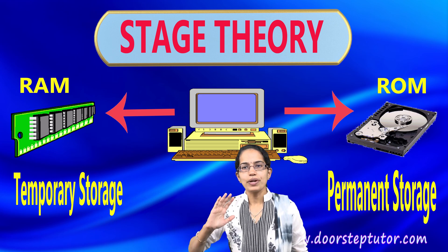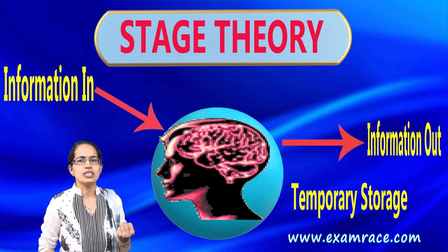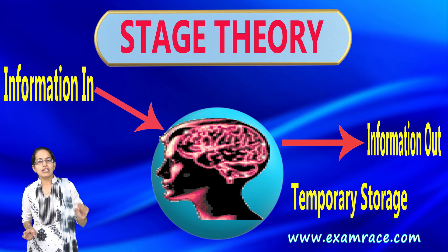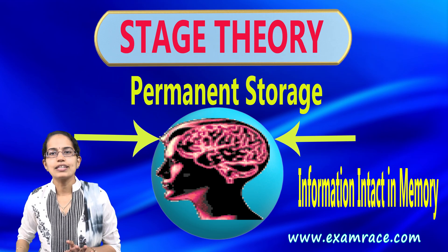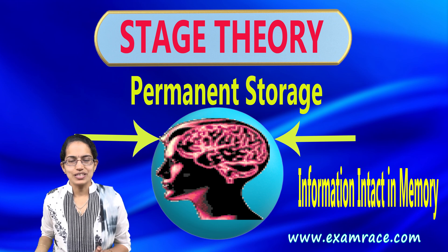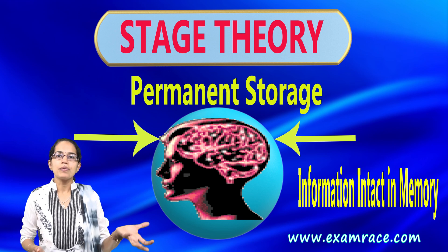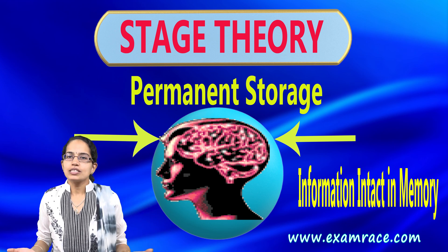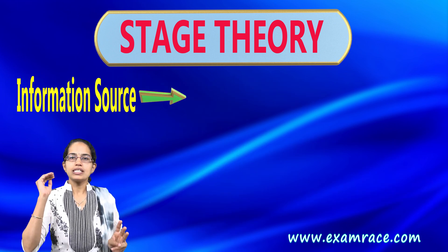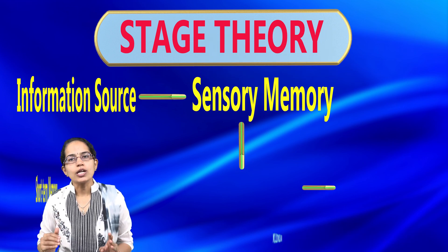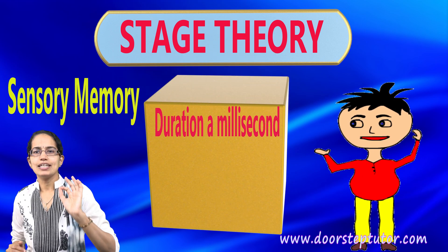Similarly, in your brain you have temporary storage units and permanent storage. Some information is meant for temporary gain — you keep it for a while and remove it — while other information is for permanent understanding, kept in the ROM or permanent storage of your brain. This whole model compares a computing system to a human brain. In this model, information comes in and there are three structural components: a sensory component, short-term memory, and long-term memory.